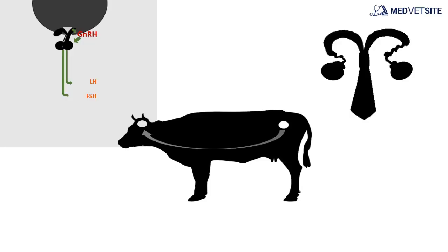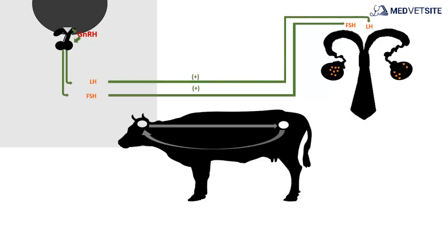These hormones act on the ovary as follows: The FSH or follicle-stimulating hormone stimulates the growth and maturation of follicles that are in the ovary. The LH or luteinizing hormone is responsible for both the last stage of maturity of the follicle that has become dominant and its ovulation.